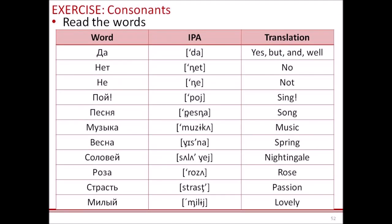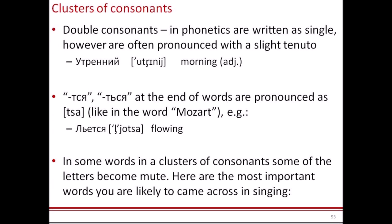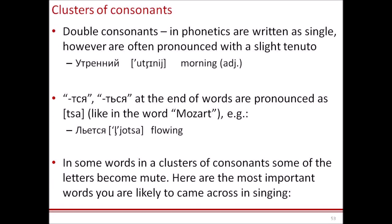Let's do some more practice: ДА, НЕТ, НЕ, ПОЙ, ПЕСНЯ, МУЗЫКА, ВЕСНА, СОЛОВЕЙ, РОЗА, СТРАСТЬ, МИЛЫЙ. We also have clusters of consonants. Double consonants in phonetics are written as single, however they are often pronounced with a slight tenuto: УТРЕННИЙ. We have a cluster of ТСЯ/ЦЯ at the end of words, and this cluster is pronounced as ЦА, like in МОЦАРТ.